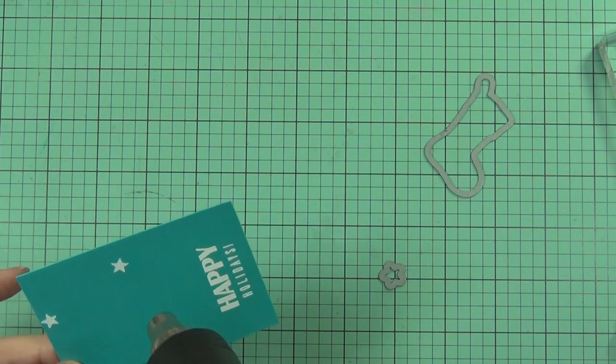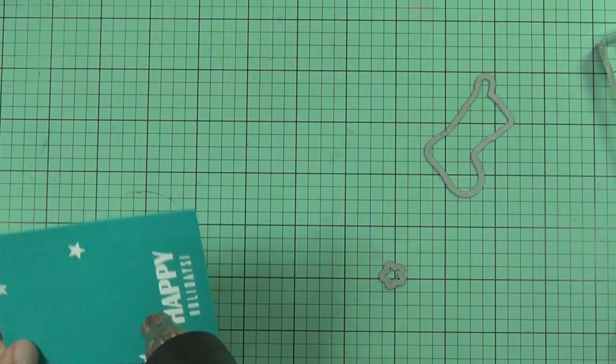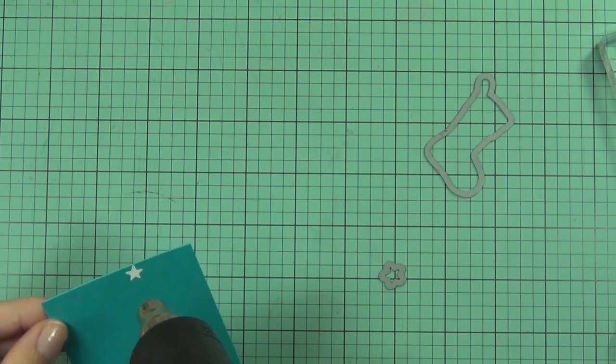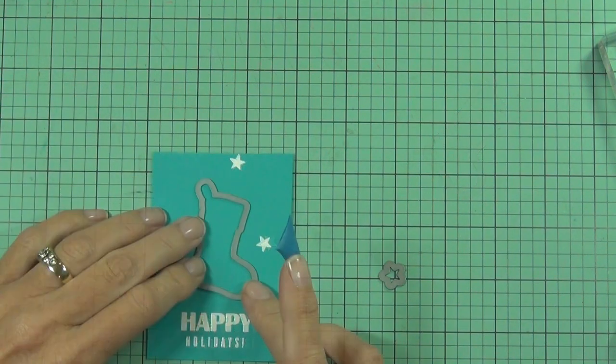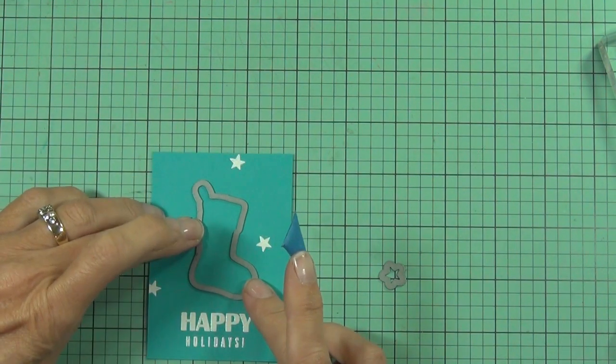So this is going to be the panel on the front of my card and this is going to create my negative space.